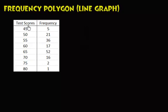This frequency distribution is dealing with test scores and the number of students who got that score. For example, 5 students got a score of 45, 17 students got a score of 60, 2 students scored a 75, and so on.